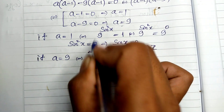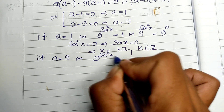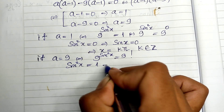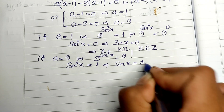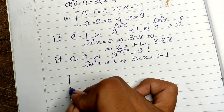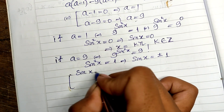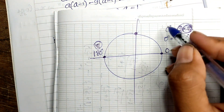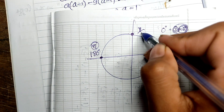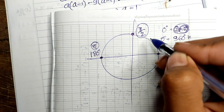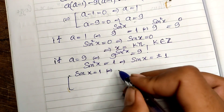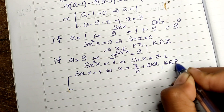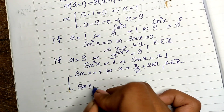Now for the case a equals 9: 9 to the power of sine squared θ equals 9, so sine squared θ equals 1, and sine θ equals plus or minus 1. For sine θ equals 1, the only angle is 90 degrees or π divided by 2. So θ equals π/2 plus 2Kπ, where K is an integer.